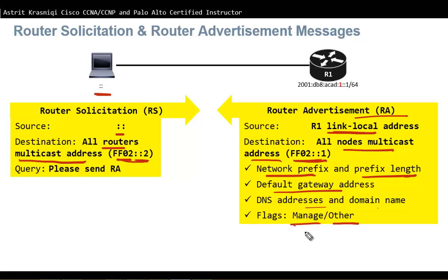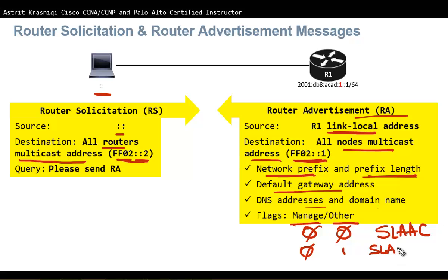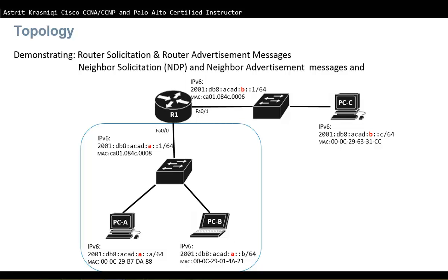If the Managed flag is 0 and the Other flag is 0, the router is telling the PC to configure its own IPv6 address using the provided prefix and prefix length — this is SLAAC. If the Managed flag is 0 and the Other flag is 1, the PC still self-configures its IP address but uses a DHCPv6 server for other information such as DNS and domain name. If the Managed flag is 1, everything must be configured through a DHCPv6 server.